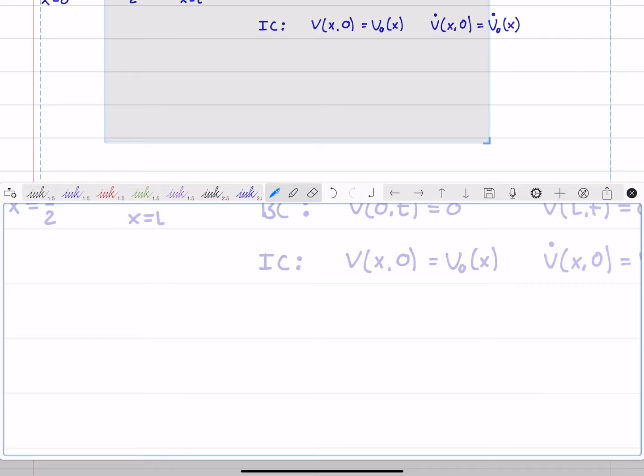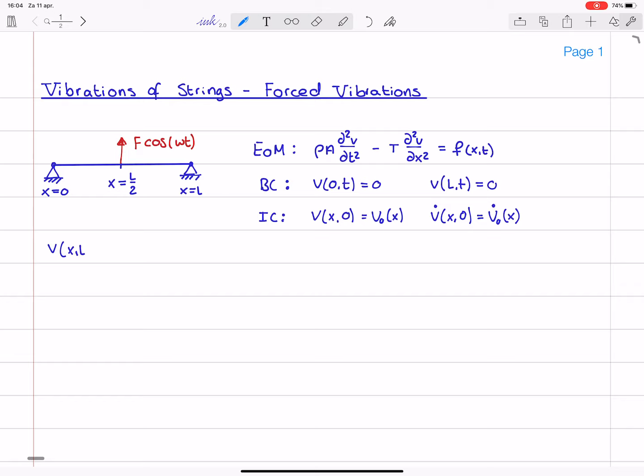Now, we start off by recalling the modal expansion, which was that v as a function of x and t can be written as the infinite sum of mode shapes times their corresponding modal coordinates, eta i. So, what I'm going to do is I'm going to substitute this into the equation of motion, and now I will carry along this force f.